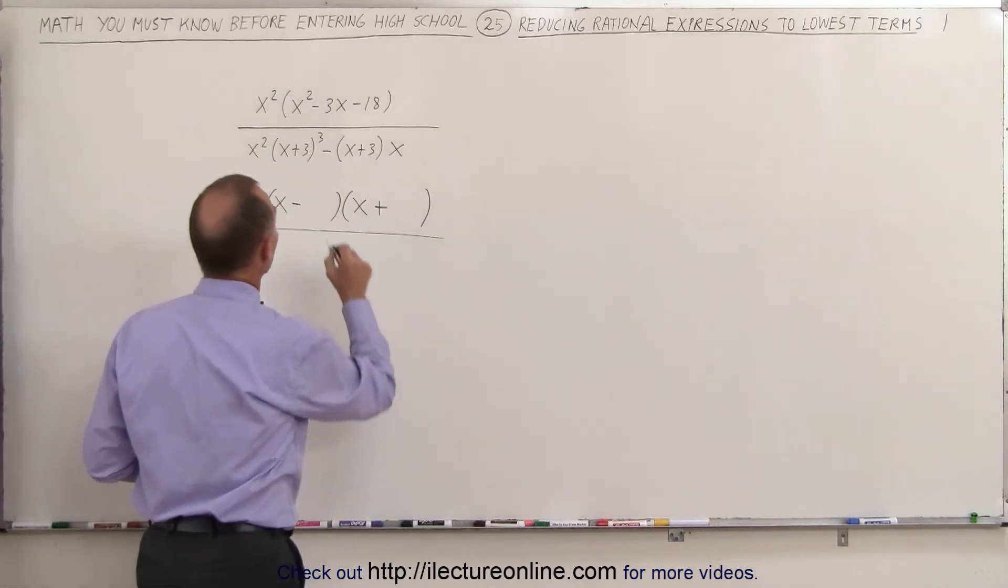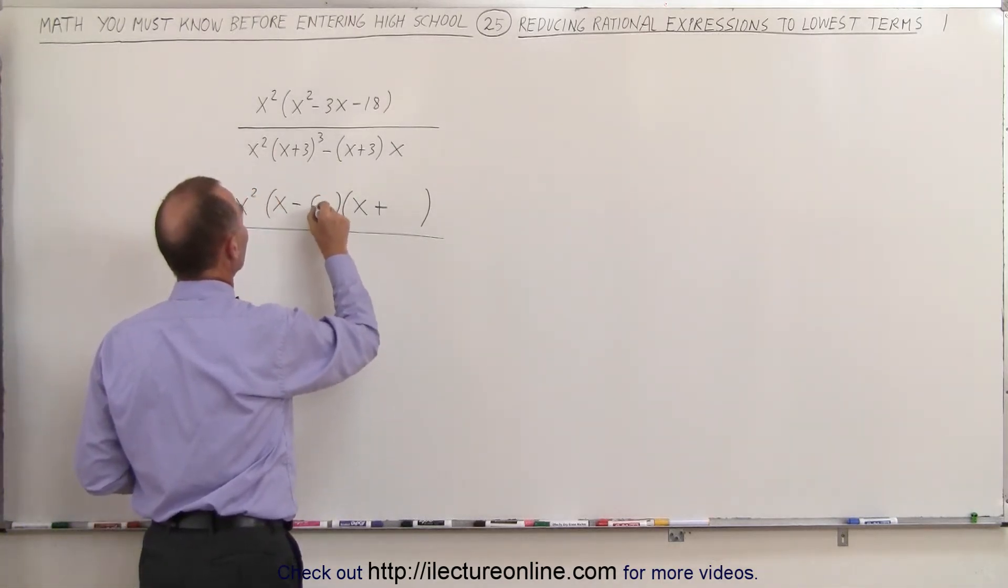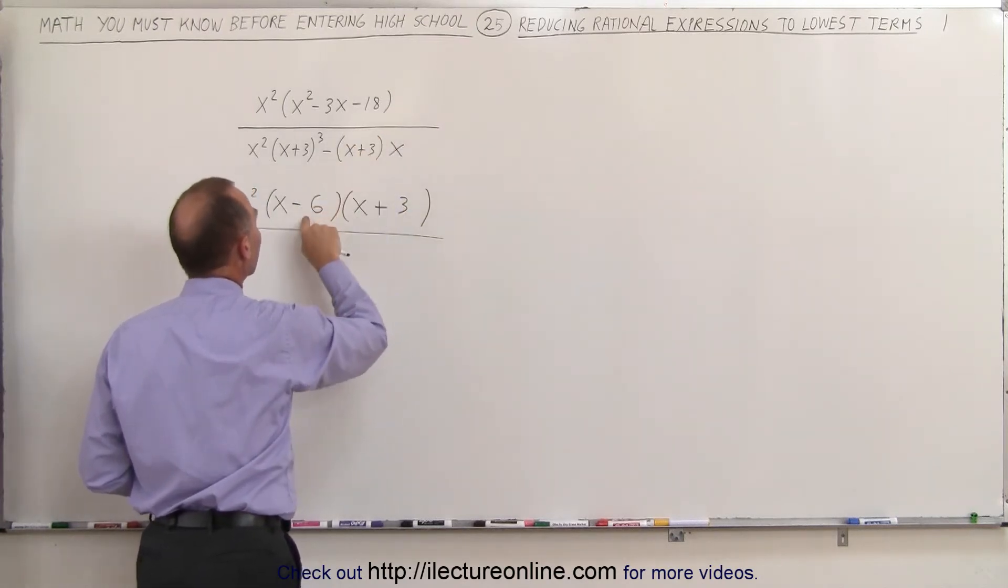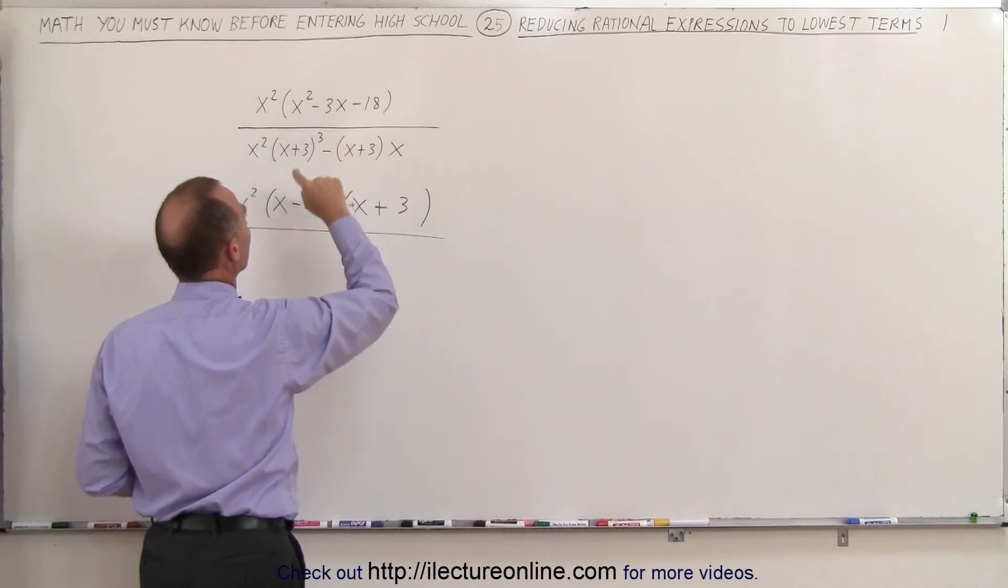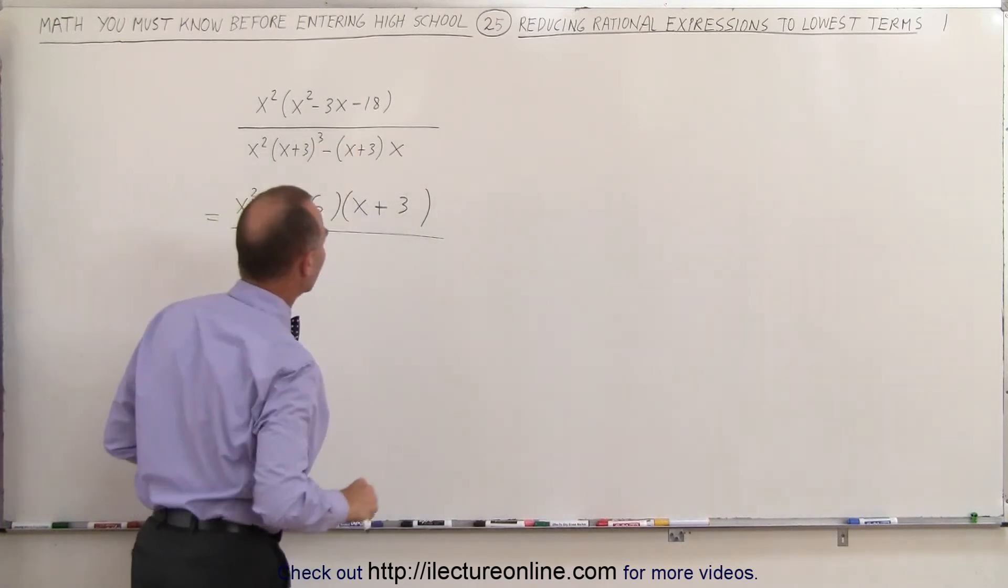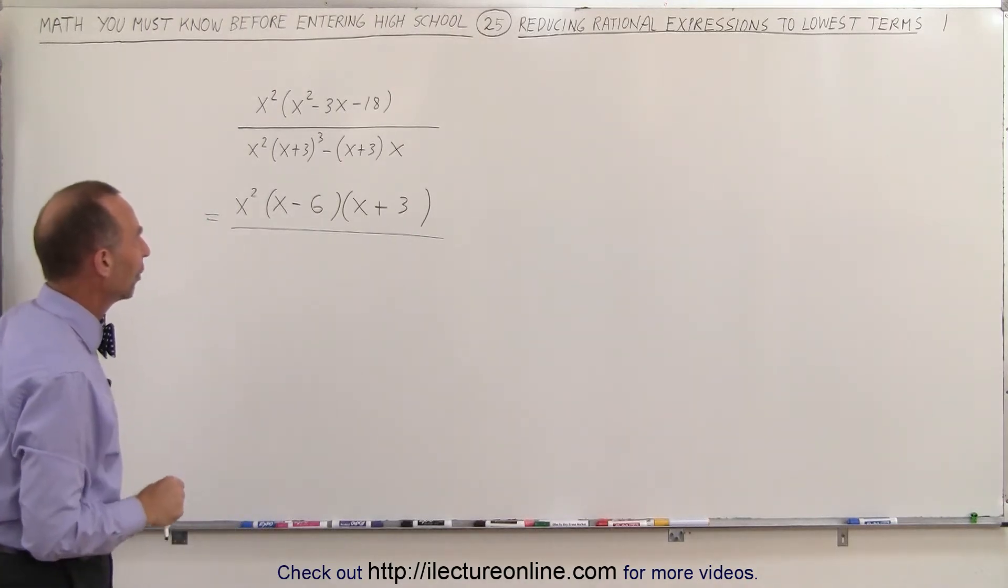Alright, so I need a bigger number as a negative, so negative 6 and positive 3. Negative 6 times 3 is a negative 18. Negative 6 plus 3 gives me, or I should say, a negative 6x and a plus 3x gives me a negative 3x. So that's the proper or the correct factored form.